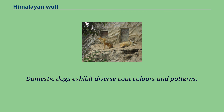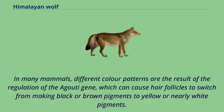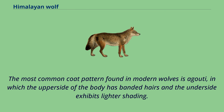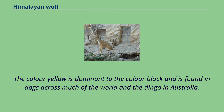Domestic dogs exhibit diverse coat colors and patterns. In many mammals, different color patterns are the result of the regulation of the agouti gene, which can cause hair follicles to switch from making black or brown pigments to yellow or nearly white pigments. The most common coat pattern found in modern wolves is agouti, in which the upper side of the body has banded hairs and the underside exhibits lighter shading. The color yellow is dominant to the color black and is found in dogs across much of the world and the dingo in Australia.